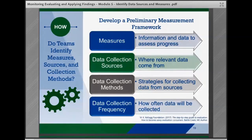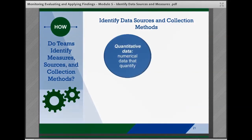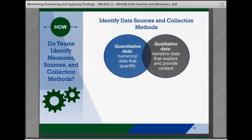Teams should also outline the data collection frequency, or how often the data will be collected. In order for teams to answer their evaluation questions and have a better understanding of the data, they should examine multiple sources when possible. Using both quantitative data — numerical data that measure and quantify what, who, and when — and qualitative data, which is narrative data that explores and provides context about how and why, strengthens the team's answers to their questions of interest.